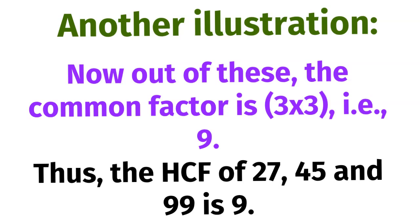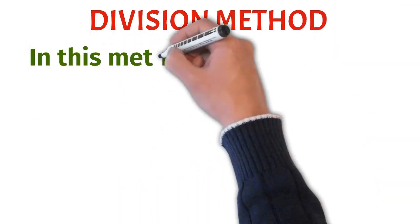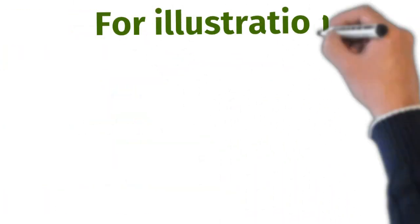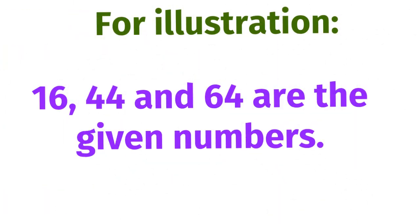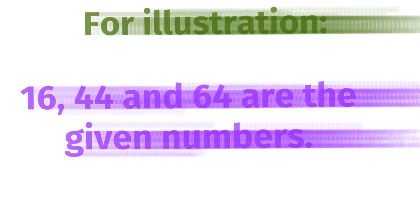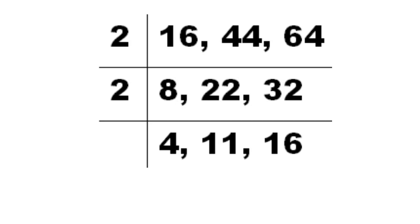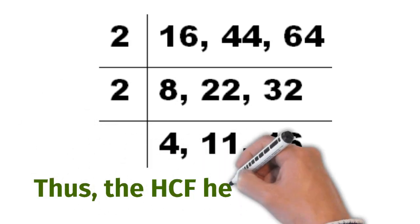Next is the division method. In this method, we divide the given numbers by a common prime number. This process continues until there is no common prime number left as a divisor. For example, 16, 44 and 64 are the given numbers. They are divided by their common prime number 2, two times. Here, the HCF is 2×2, that is 4.